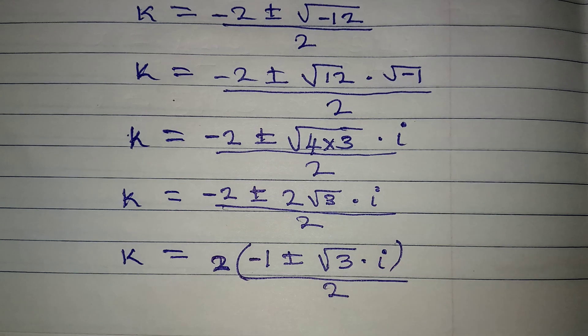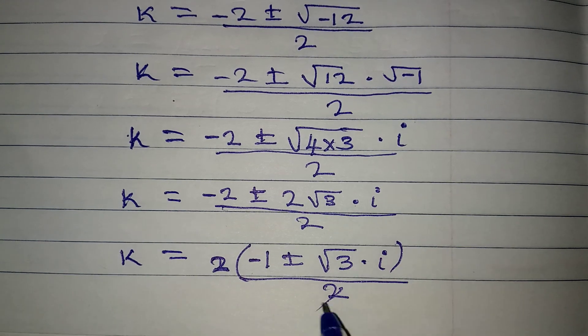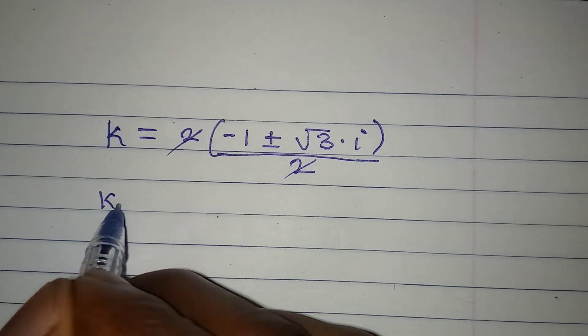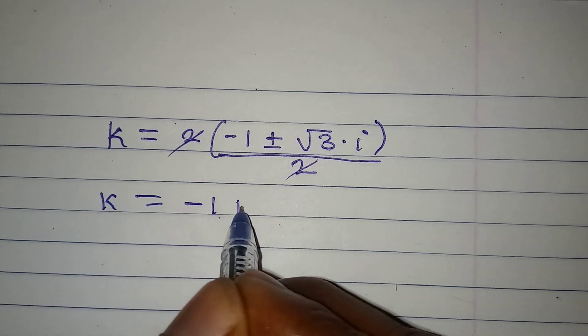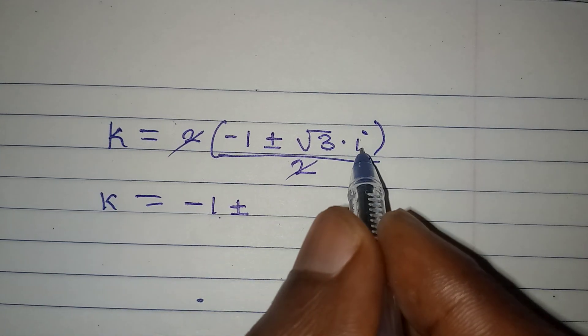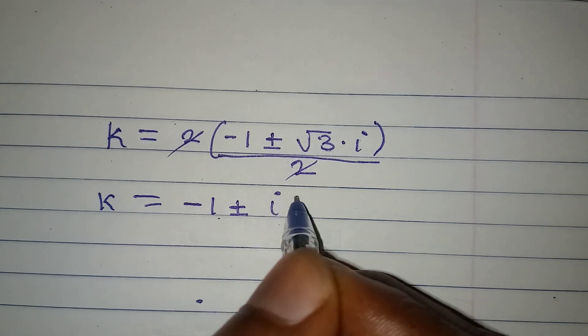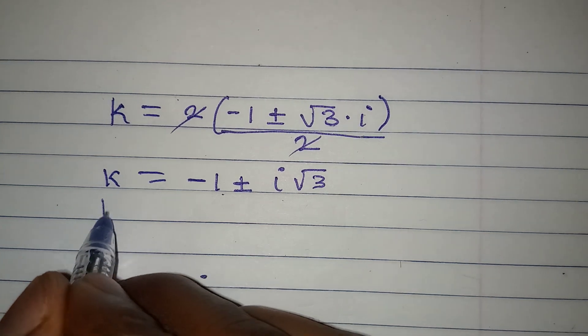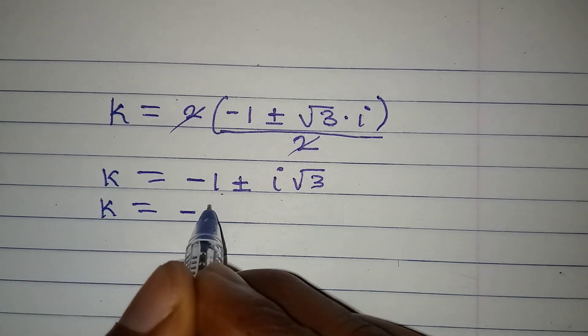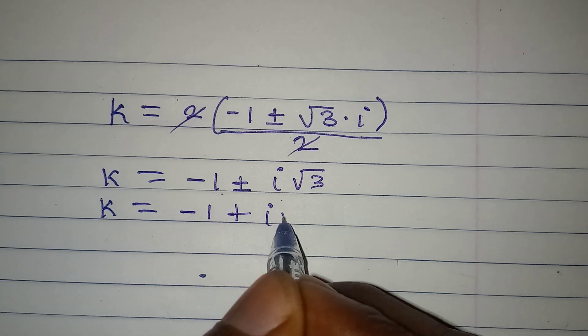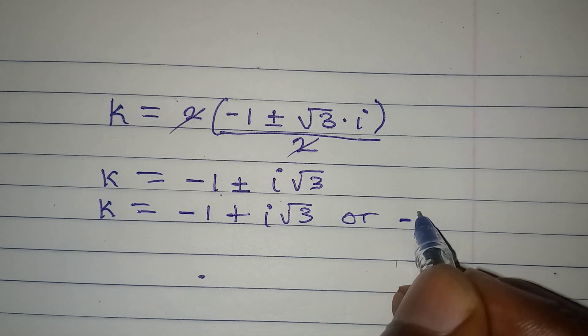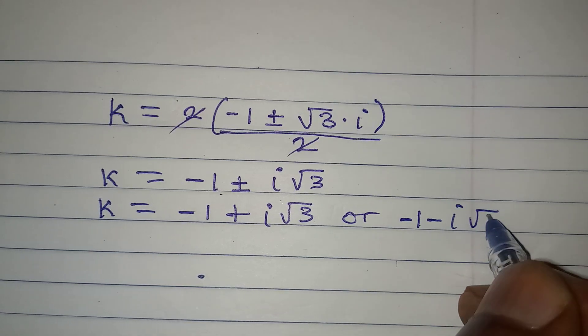So that this can now cancel this. And our k will be equal to. So k now will be equal to -1 ± i√3. I want to write i first. So write i square root of 3. Now, let's break this into 2. So that k will be equal to -1 + i√3 or -1 - i√3.